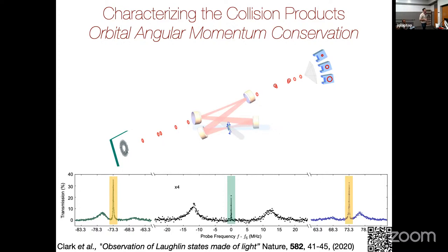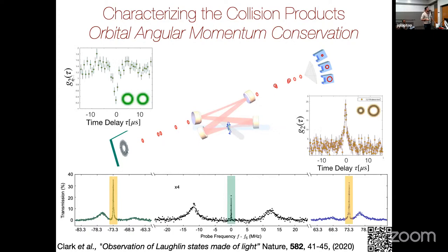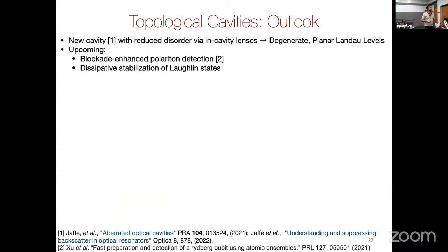I'm going to skip over the Laughlin state piece of this story, but the basic idea is that we've talked through how to make all the ingredients, and putting them together to do the many-body physics is the next step. One can see collisions that change the orbitals of the photons and correlate them into Laughlin states. We've also built a new cavity where we're trying to remove disorder in the Landau level by adding lenses to the system — this is a real photo of the system with a blue buildup cavity to have more blue power in the physics cavity.